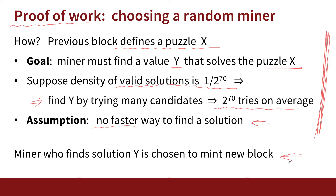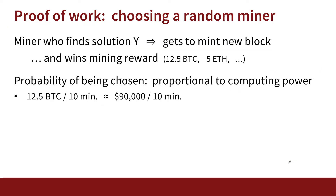Whoever finds the solution Y first publishes their block and mints the new block, getting the mining rewards. In some cases, two people might find a solution at the same time — that introduces a fork. Bitcoin actually has a mechanism to handle these forks, but I won't discuss that here; it's covered at great length in our blockchain classes. The miner who finds the solution Y is the one that mints the new block and therefore wins the mining reward.